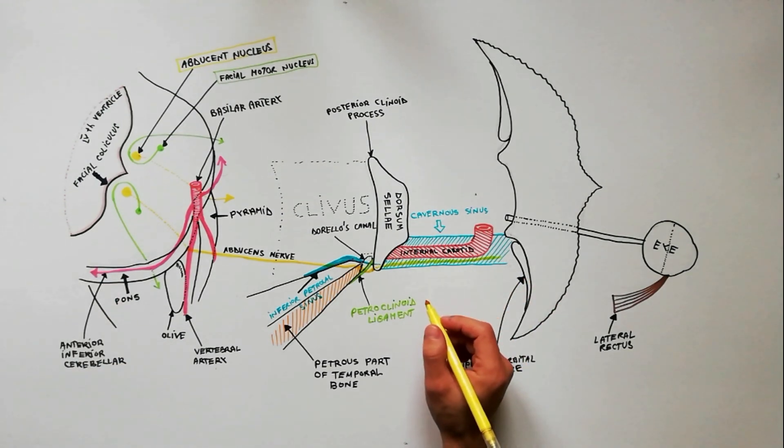In the cavernous sinus, it runs forward, inferolateral to the internal carotid artery.